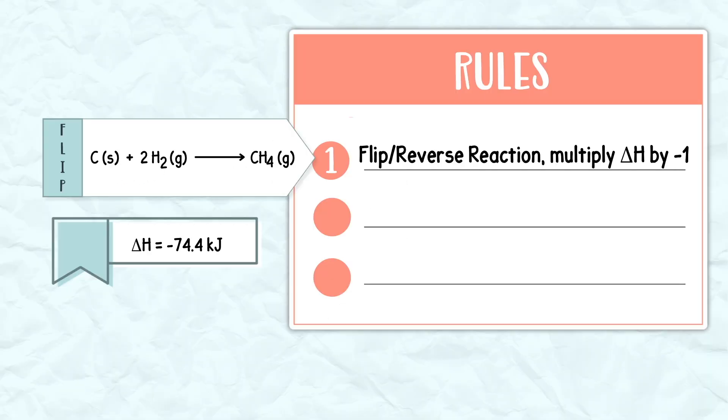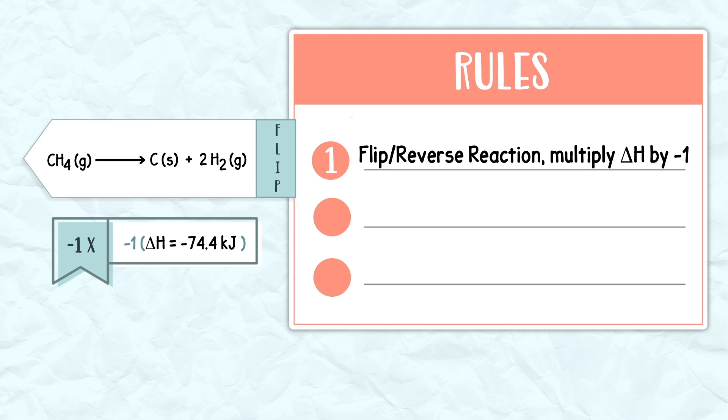Recall our three main rules for Hess's Law. Rule one is whenever you flip or reverse a reaction, you must multiply the change in enthalpy by a negative one.